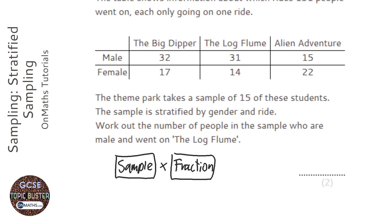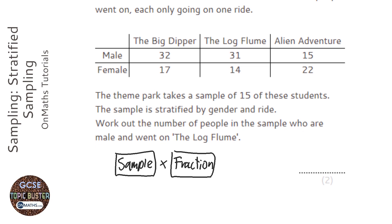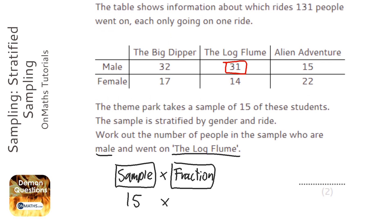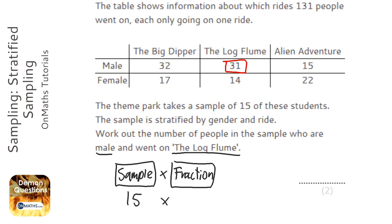So our sample is 15, and we're going to multiply that by the fraction for males who went to the log flume. That group is shown here, and the question says there are 31 males who went to the log flume out of a total of 131.